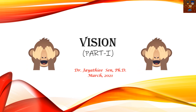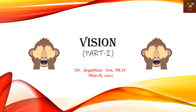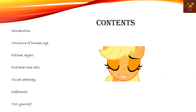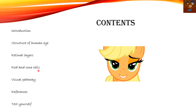Hello friends, today we are going to discuss about a very important special science that is vision. The contents we will cover include: introduction — what vision actually is — then the structure of the human eye, retinal layers (the retina has ten layers), rod and cone cells which help in day and night vision, and finally the visual pathway. Let's start.